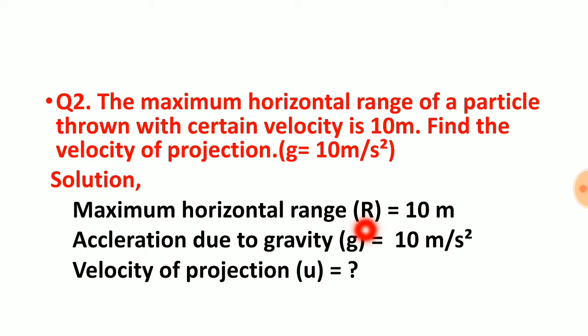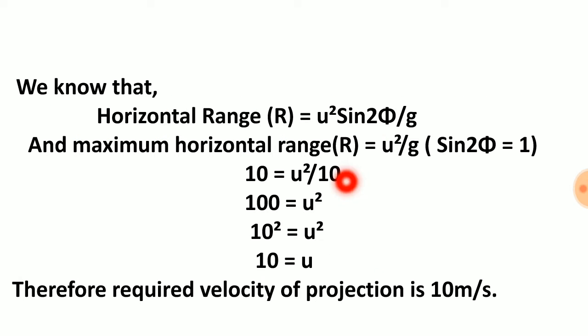Now the maximum horizontal range is 10 meters. This is given, and acceleration due to gravity is 10 meters per second squared. Then we need to find the velocity of projection. Let us see our formula to calculate a horizontal range.